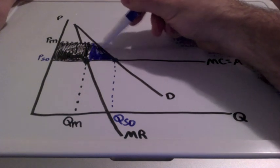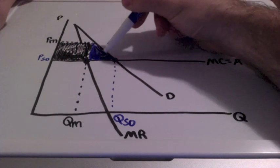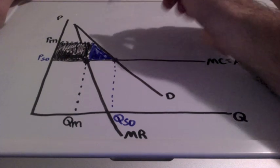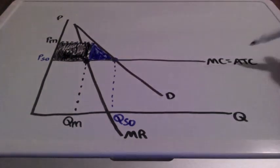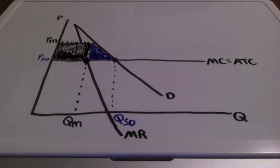So remember, for a natural monopoly, marginal cost can equal average total cost, though marginal cost doesn't technically have to be constant.